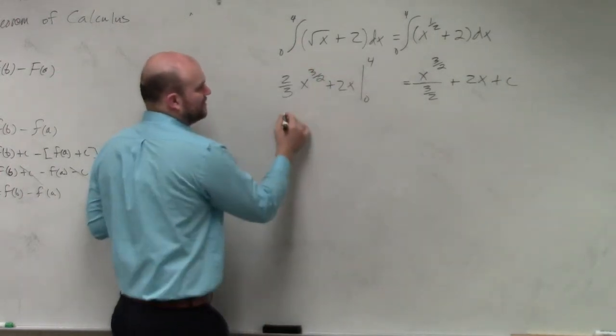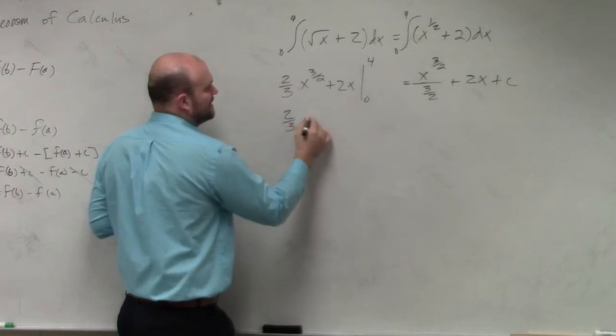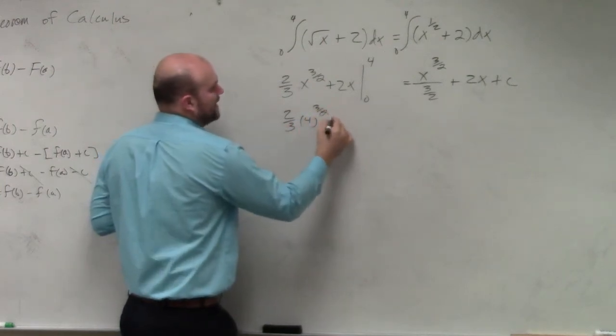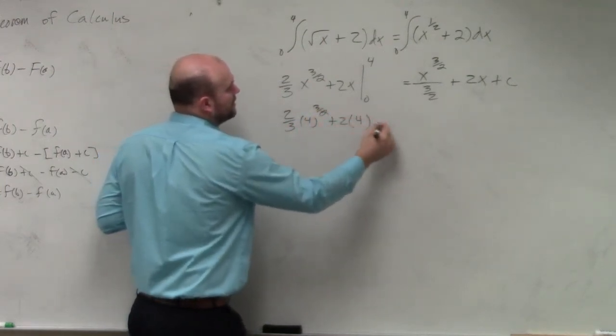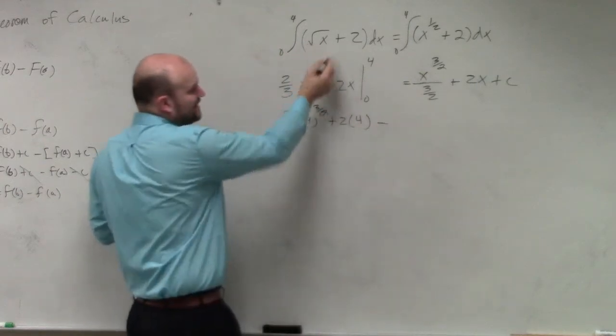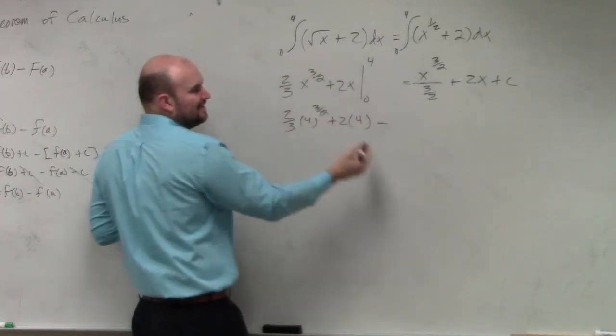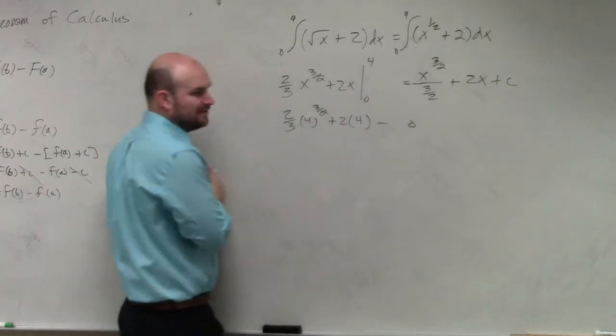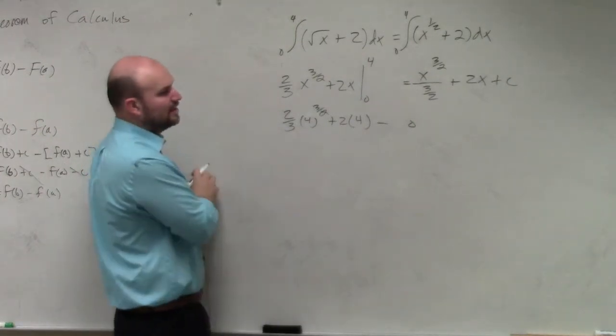Obviously, guys, so therefore, when I multiply 2 thirds times 4 to the 3 halves plus 2 times 4 minus, if I'm doing the same thing, everything is 0, then that's just going to give me 0. So I'm not even going to fill that in, because you're evaluating at 0.